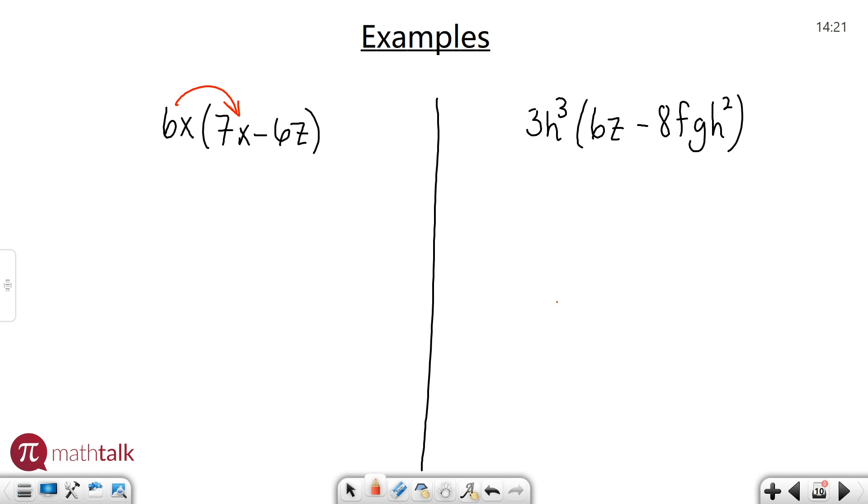I like to draw arrows. Take 6x and multiply it by 7x—6 times 7 is 42, and x to the first times x to the first is x², because you add the exponents. Then take 6x and multiply by negative 6z. 6 times negative 6 is negative 36, and x and z are different variables, so just copy them down. You can't add exponents if the variables are different. Final answer: 42x² - 36xz.